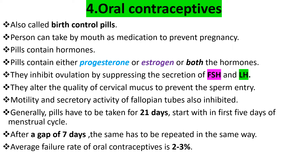What are oral contraceptives? Pills used as contraceptives taken orally for preventing unwanted pregnancies are called oral contraceptives. Oral contraceptives are also called birth control pills, and the pills can be taken by mouth as a medication.